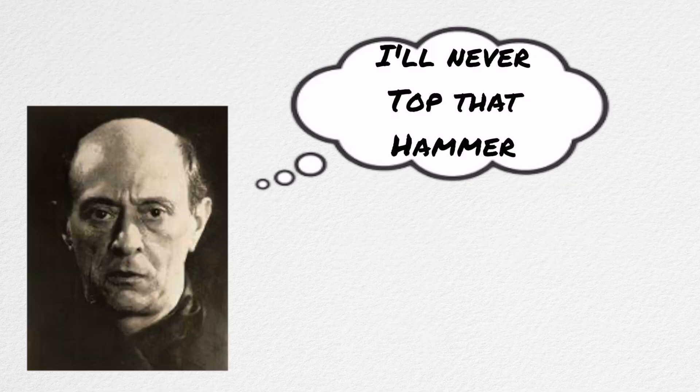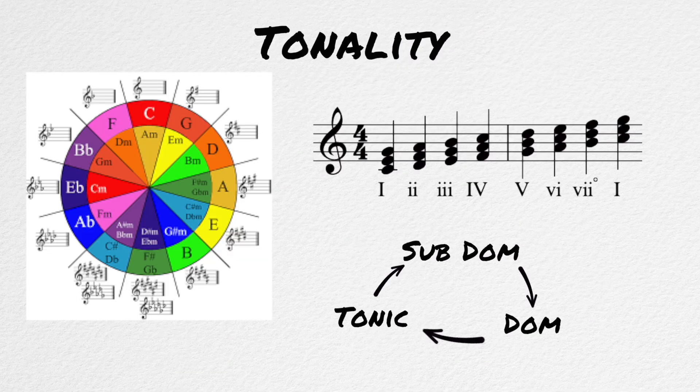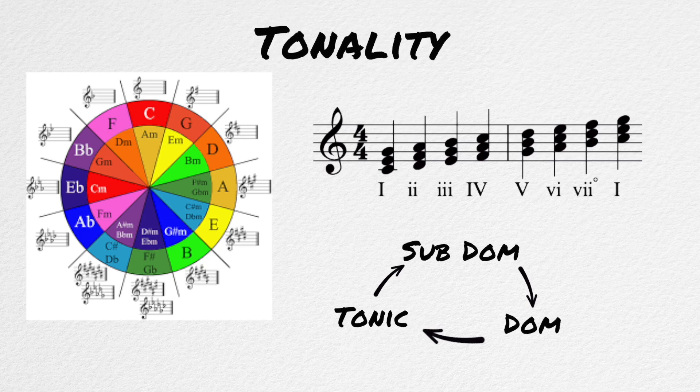I imagine this is what Schoenberg was thinking when he was coming up with his 12-tone system. Most music that people enjoy is based on the system of tonality. Put simply, tonality is the arrangement of musical notes into keys and hierarchies. Within these keys, each note and chord has a function, and the goal of tonality is to create tension and release through this harmonic structure.